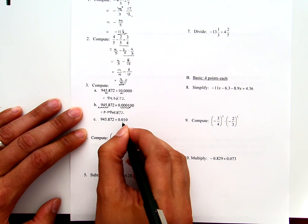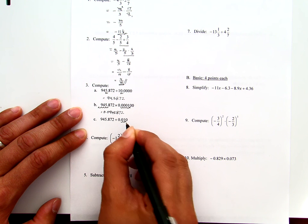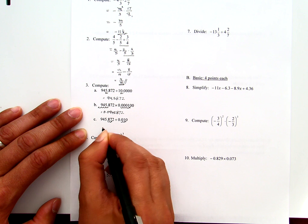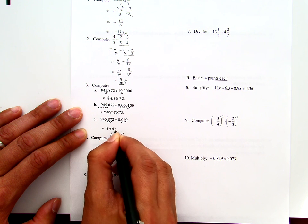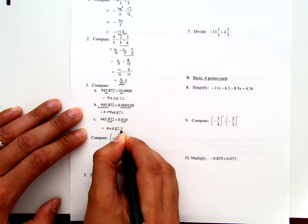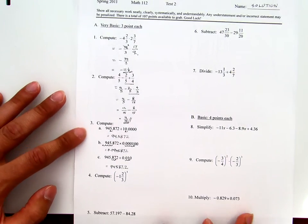Now here, I will move this twice to the right. Therefore, I move this twice to the right. That becomes 94587.2. That's for Spring 2011 Math 112 Test 2, number one, two, and three.